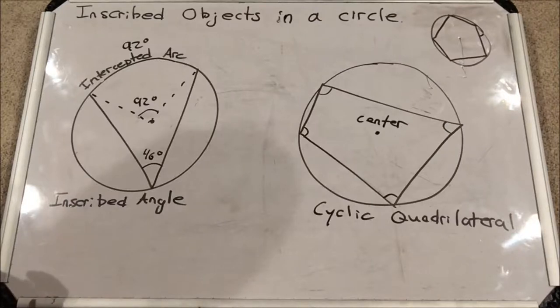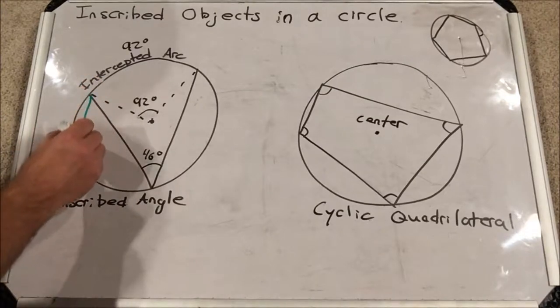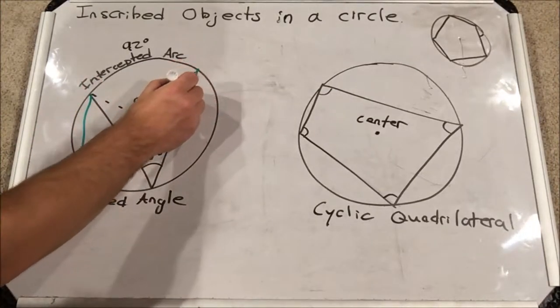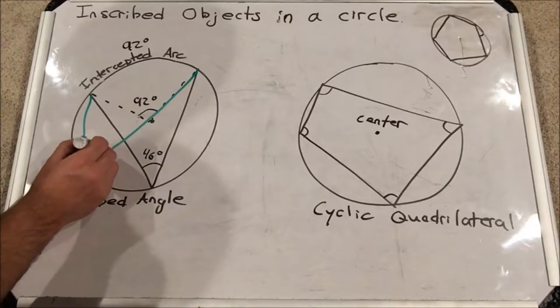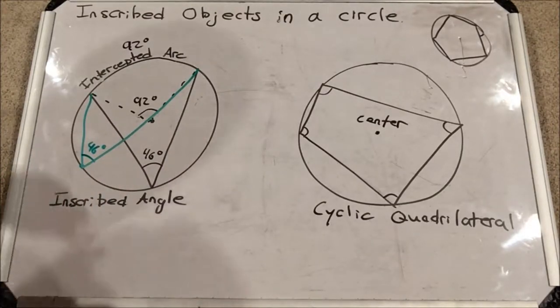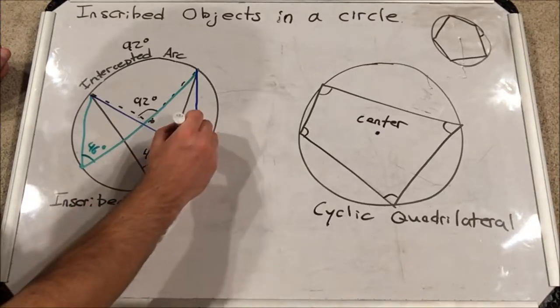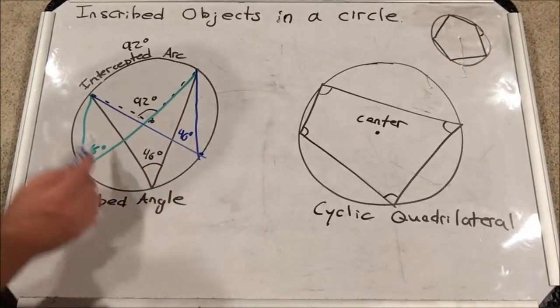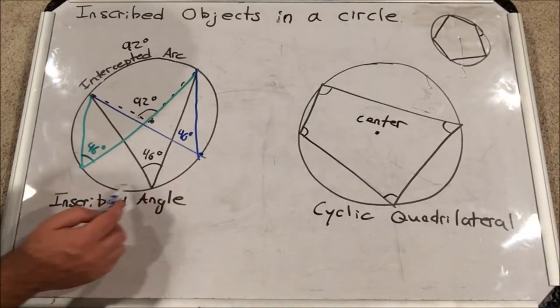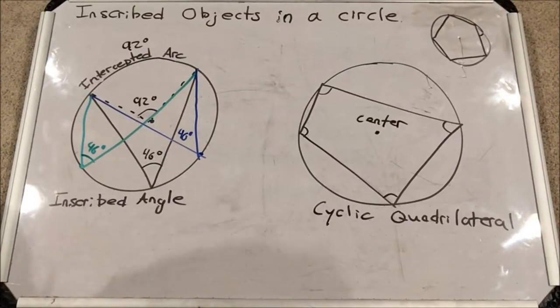The funny thing is, the interesting thing is, I can draw inscribed angles all over this circle. If they intercept the same arc, they are equal in degree measure to the other inscribed angles. Here's another one. If I draw from here, that's also 46 degrees. So you can basically move this point along the circle, and if you leave the other two ends of the angle in the same position, your angles will all be 46 degrees, half of the arc's angle measure. Quite interesting.